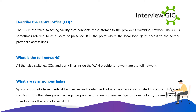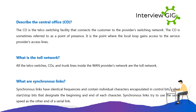Describe the central office (CO). The CO is the telco switching facility that connects the customer to the provider's switching network. The CO is sometimes referred to as a point of presence. It is the point where the local loop gains access to the service provider's access lines. What is the toll network? All the telco switches, COs, and trunk lines inside the WAN provider's network are the toll network.